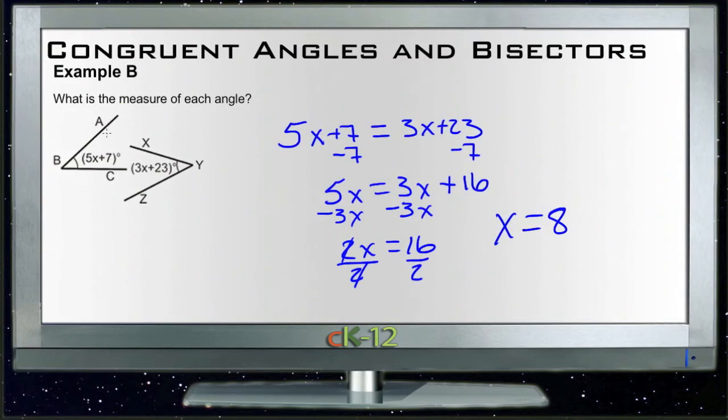Dividing both sides by 2 gives us x equals 8. So if x is 8, then our angle ABC would be 5 times 8 plus 7, or 47 degrees. And angle XYZ would be 3 times 8, which is 24 plus 23, or also 47 degrees.